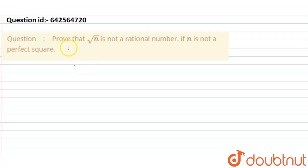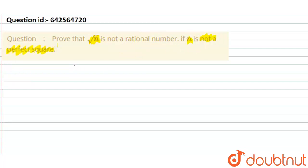Let us start with the question. What is given in the question? Prove that the square root of n is not a rational number if n is not a perfect square. So what I will do is suppose that n is a rational number.